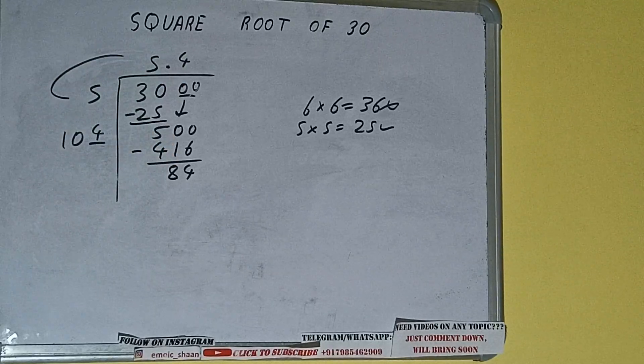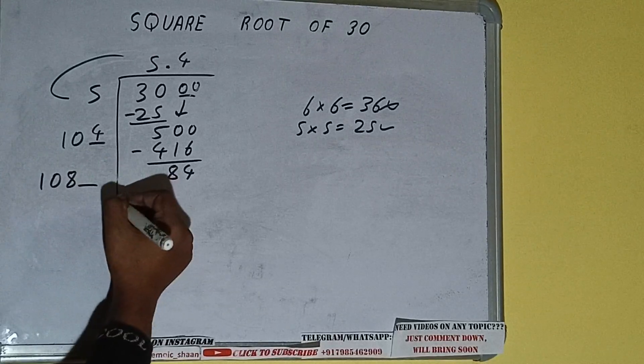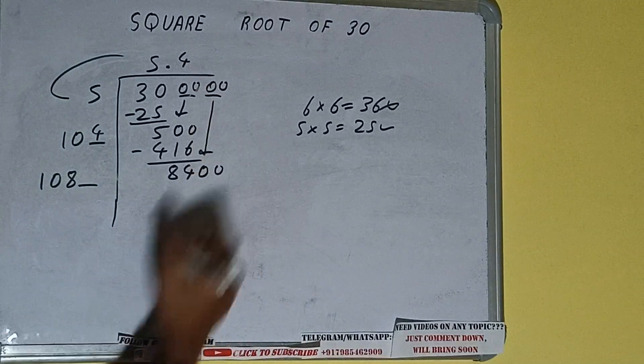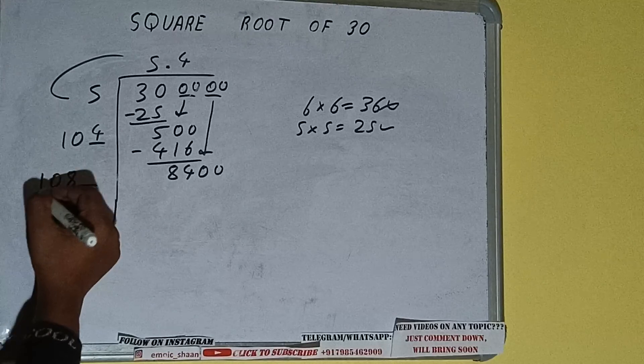so add both. 104 plus 4 will be 108, and one digit extra. This number we need to make it big, so bring the next pair of zeros down and it will be 8400. Now compare this 108